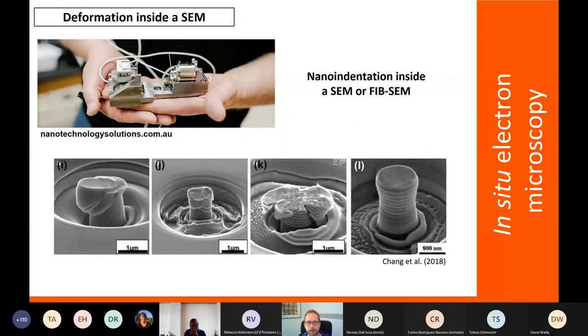To give you some examples, here you see a nano indentation system that you can place into an SEM. You could, for example, make little pillars of quartz using the FIB and then deform these pillars to understand the nano mechanics of a certain material, how slip systems start to originate and then eventually catastrophically deform this material. So a lot of people have been using this in situ SEM technique.